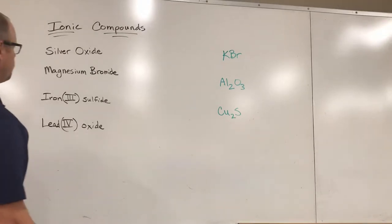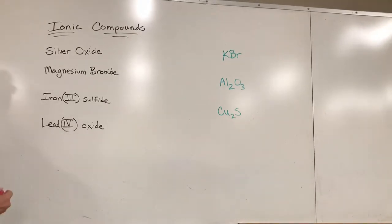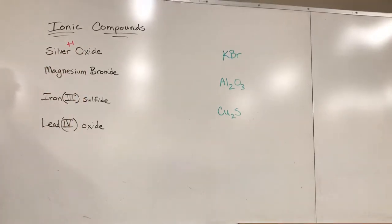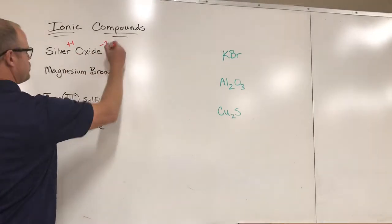You have a periodic table where you can look up a lot of these charges. Silver is not one you would necessarily know off the top of your head, so you flip over to the back of your periodic table and you look up and find that silver is a plus one ion. That means it's going to lose one electron - each atom wants to lose one electron.